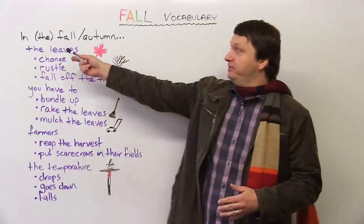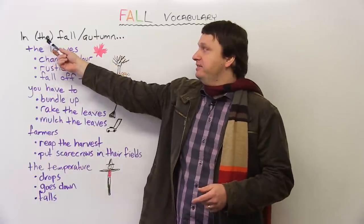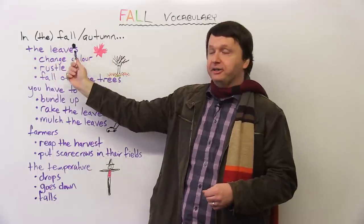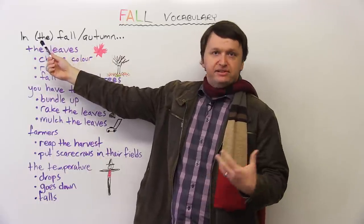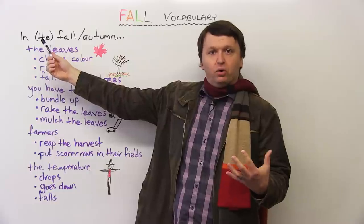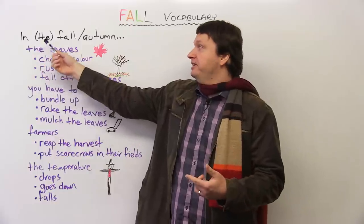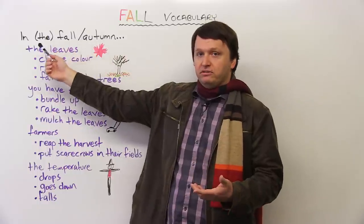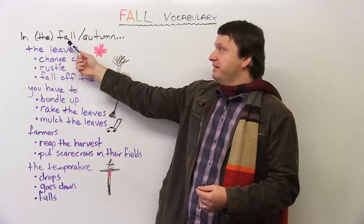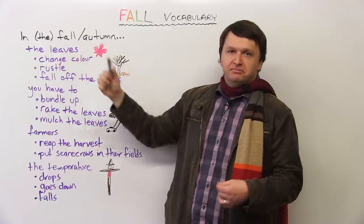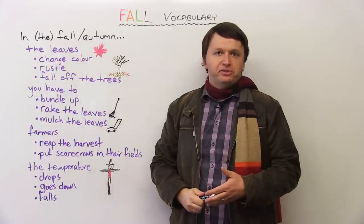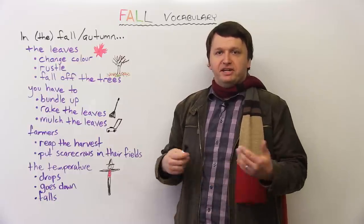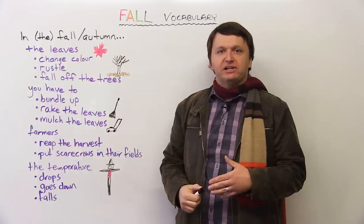So first, the top sentence says in fall or autumn or in the fall, the autumn. When you're talking about seasons, you can use the article the or not. So you could say in the fall or in fall, in the autumn or in autumn. And again, fall or autumn, doesn't matter which one you use, everyone will understand that you're talking about the season where things get colder, the leaves change color, etc.